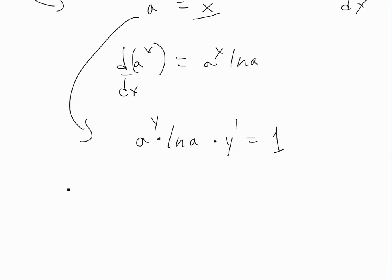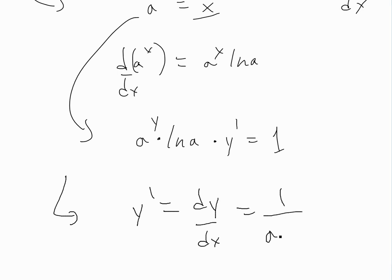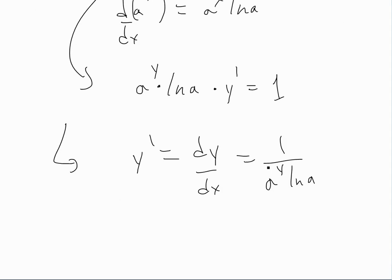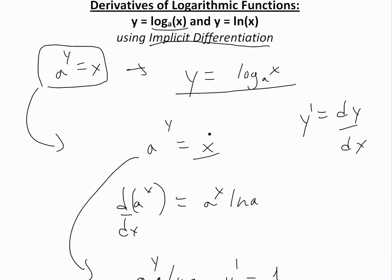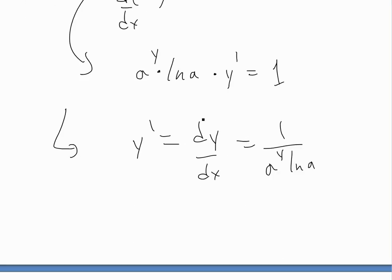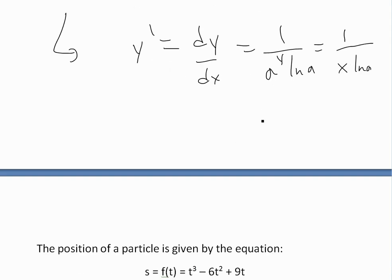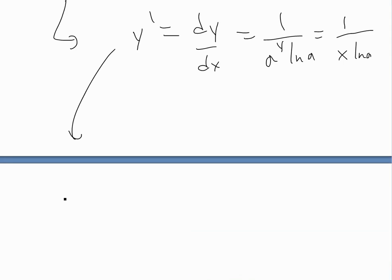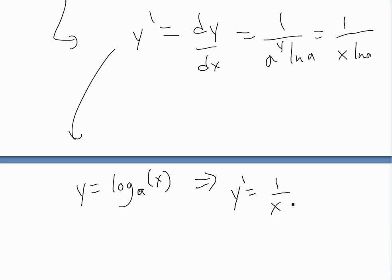Rearranging, we get dy/dx = 1 / (a^y · ln a). Since a^y = x, this simplifies to 1 / (x · ln a). So the derivative of y = log_a(x) is y′ = 1 / (x ln a).